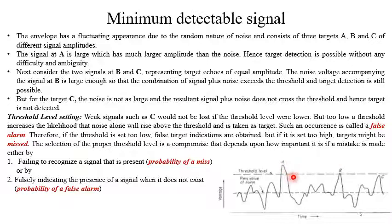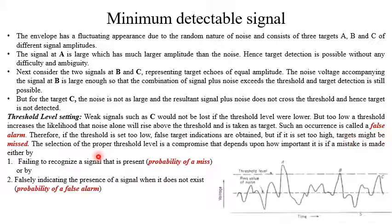If the threshold is set too high, the target might be missed — for example, target B will fall below the threshold and be treated as simple noise. The selection of the proper threshold level is a compromise that depends upon how important it is if a mistake is made: either by failing to recognize a signal that is present (the probability of miss), or by falsely indicating the presence of a signal when it does not exist (the probability of false alarm). The signal-to-noise ratio necessary to provide adequate detection is one of the important parameters that must be determined in order to compute the minimum detectable signal.